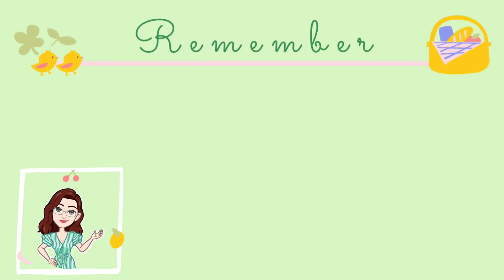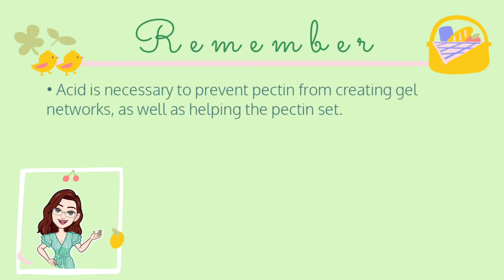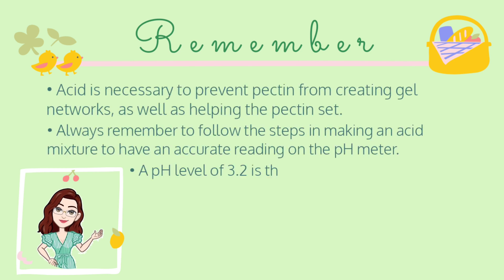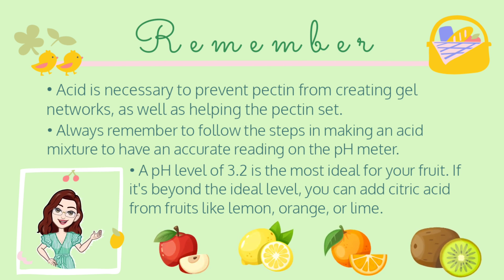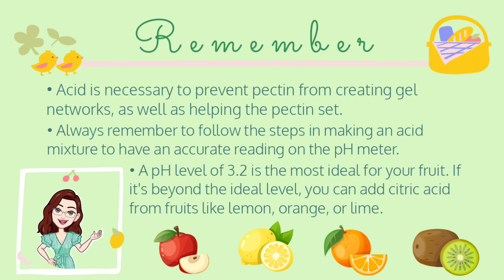Another thing to remember: acid is necessary to prevent pectin from creating gel networks as well as helping the pectin set. Always remember to follow the steps in making an acid mixture to have an accurate reading on the pH meter. And lastly, a pH level of 3.2 is the most ideal for your fruit. If it's beyond the ideal level, you can add citric acid from fruits like lemon, orange, or lime.